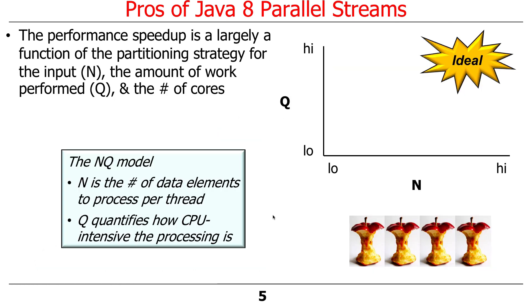How much of a speed-up would you get? Well, it really depends on several factors. How large is your input set? The bigger the input set, all things being equal, the bigger the win from parallelism. How much work do you do on each of the items that you're processing in parallel? If it's more processing, you'll get a bigger win from parallelism.